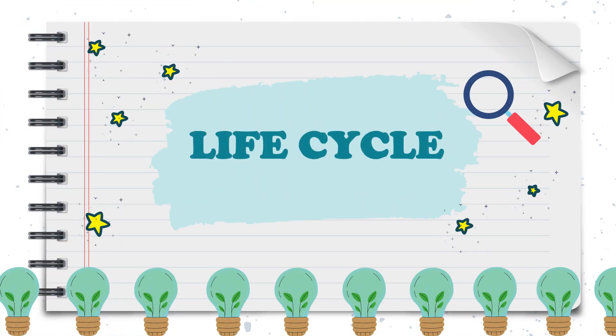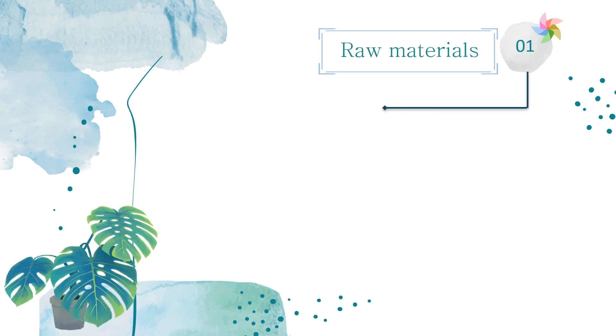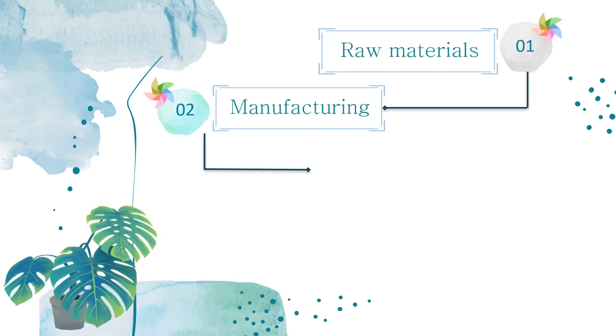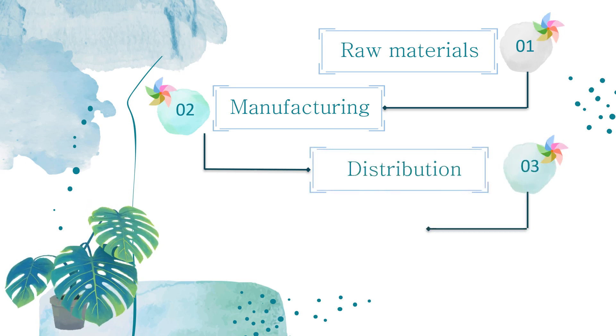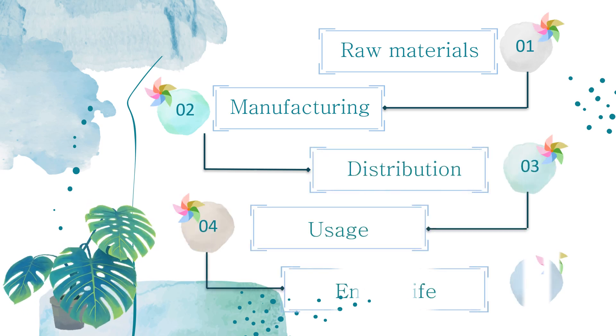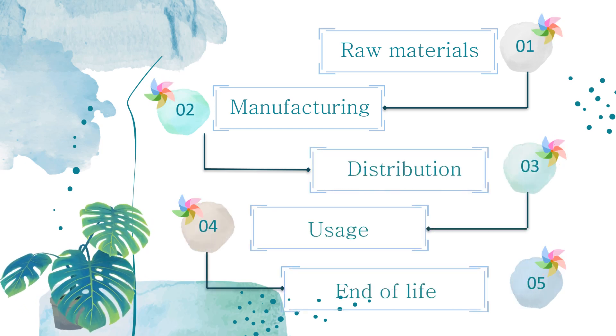Life cycle of chewing gum. Here are the topics for the life cycle assessment of chewing gum: 1. Raw material extraction, 2. Manufacturing, 3. Distribution, 4. Usage, 5. End of life.